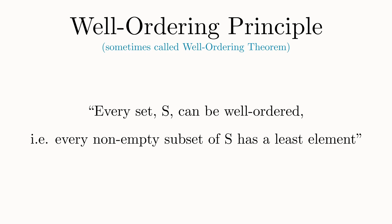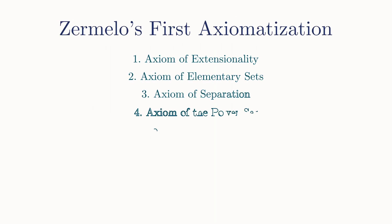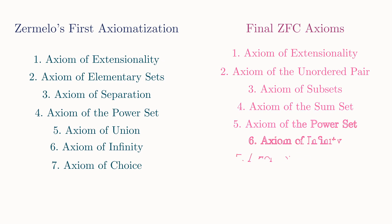Where Cantor failed, however, Zermelo succeeded. In the process of spelling out the foundational principles underlying his proof of the well-ordering principle, Zermelo formulated the first axiomatized version of set theory. A few years later, Thorolf Skolem, Abraham Fraenkel, and John von Neumann each contributed to finalizing what has become the standard foundations of mathematics accepted by most mathematicians, the Zermelo-Fraenkel choice axioms, or ZFC.